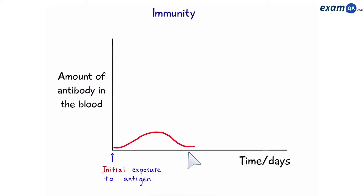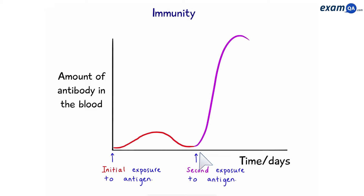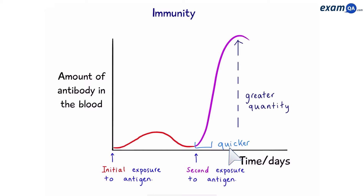If in the future the person is exposed again to the same antigen, the concentration of antibodies will be much higher and faster. This is called the secondary immune response. Notice the differences between the primary and secondary: mainly that the secondary immune response produces antibodies much more quickly and also in greater quantity. This is thanks to the presence of memory cells.